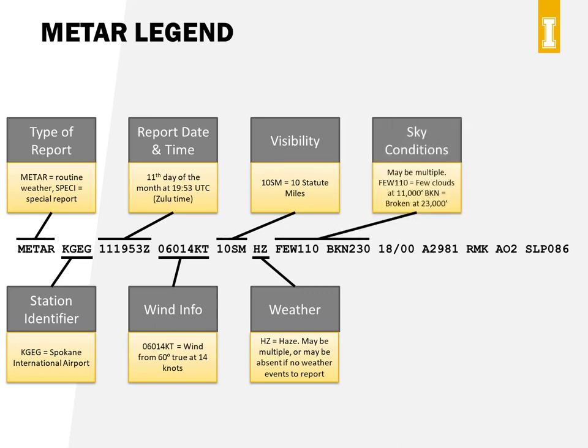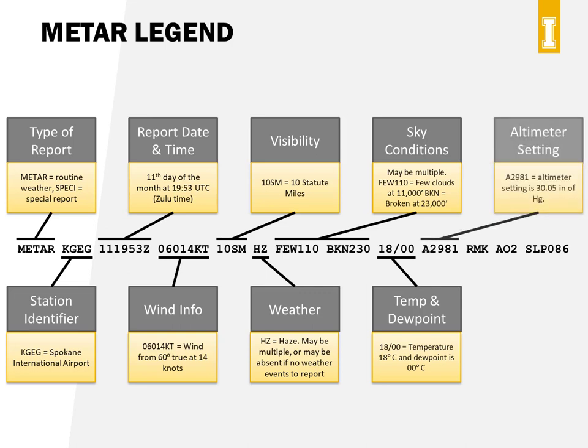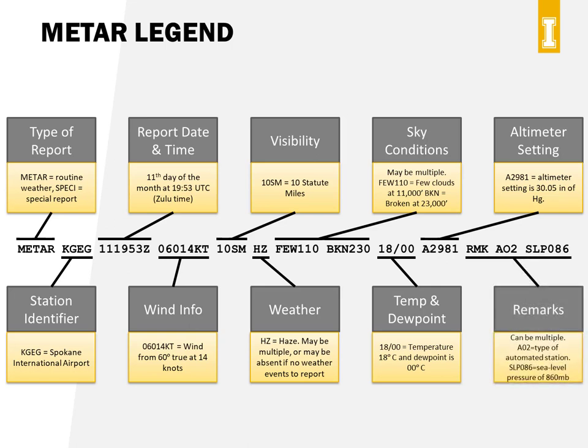Next we have sky conditions that tell you how much of the sky is covered by clouds and the altitude of the cloud ceiling. The following block gives you the current temperature before the slash and the dew point after it, both in degrees Celsius. The block starting with A gives you the current altimeter setting for the airport, which is important for manned pilots but less so for UAS pilots. The last block is for remarks or comments about the weather report.